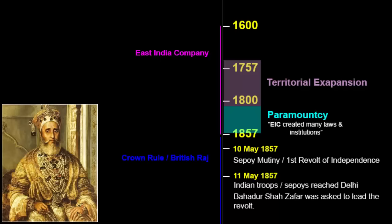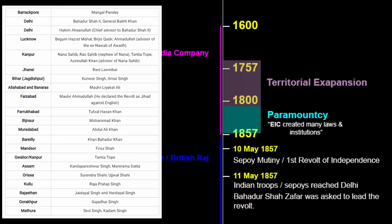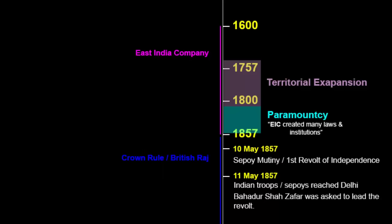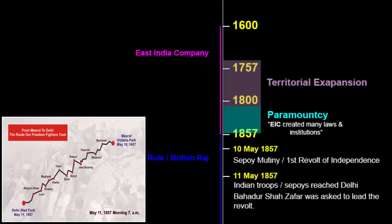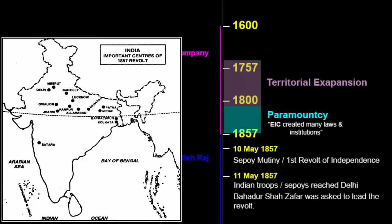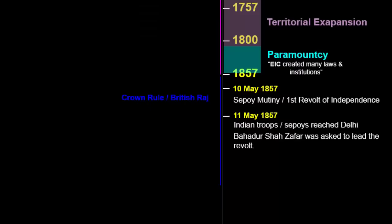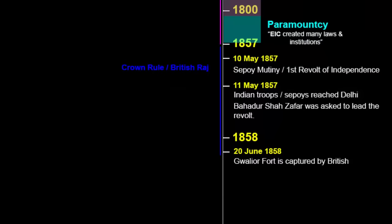On 10th May 1857 in the town of Meerut, a mutiny erupted among Indian troops of the East India Company's army. The next day, on 11th May 1857, the Indian troops reached Delhi and asked Bahadur Shah Zafar to lead them. The mutiny spread rapidly to other places like Delhi, Agra, Kanpur, Bareilly, Gwalior, Jhansi and Lucknow — basically across present-day Haryana, Bihar, the Central Provinces and the United Provinces. The British controlled it finally in Gwalior on 28th June 1858, meaning the revolt lasted about one to one and a half years.